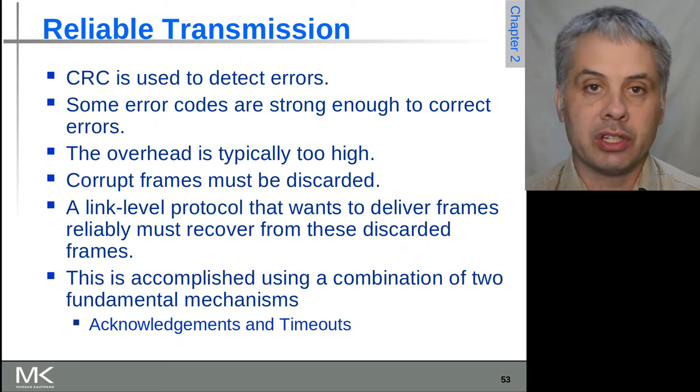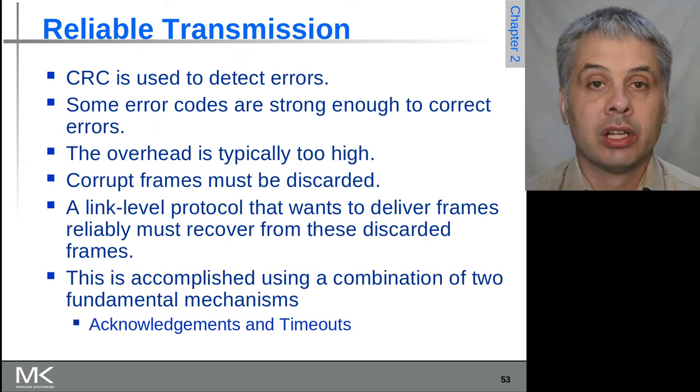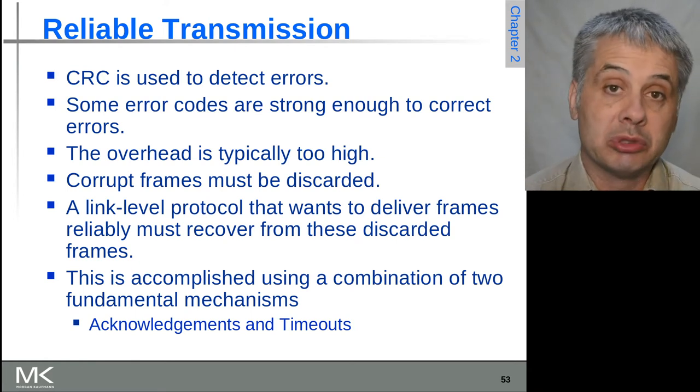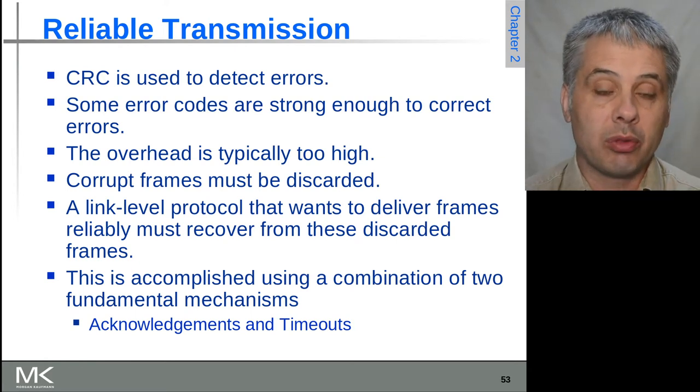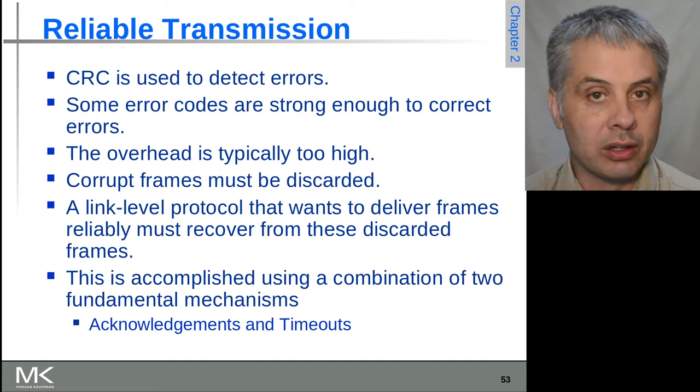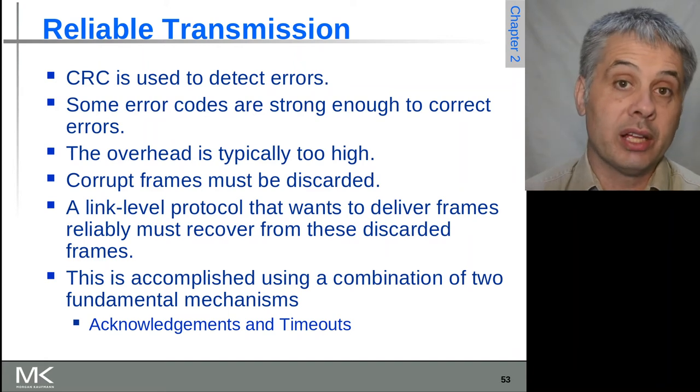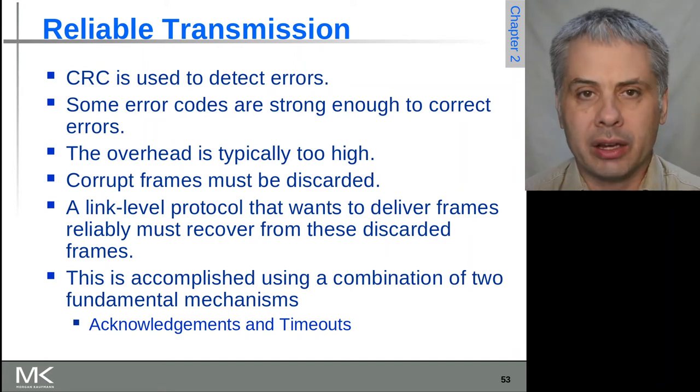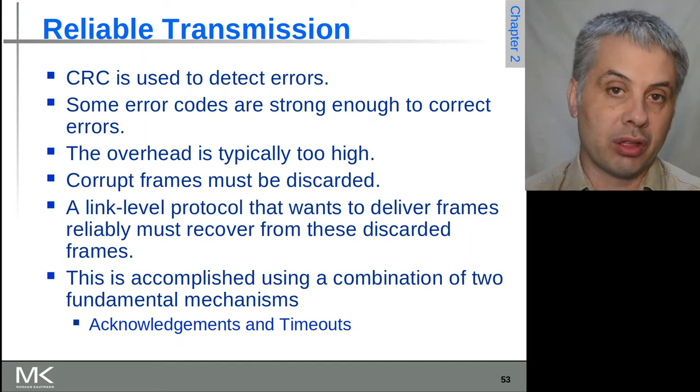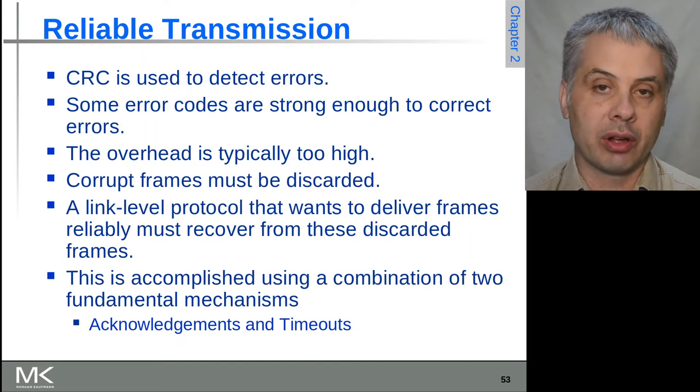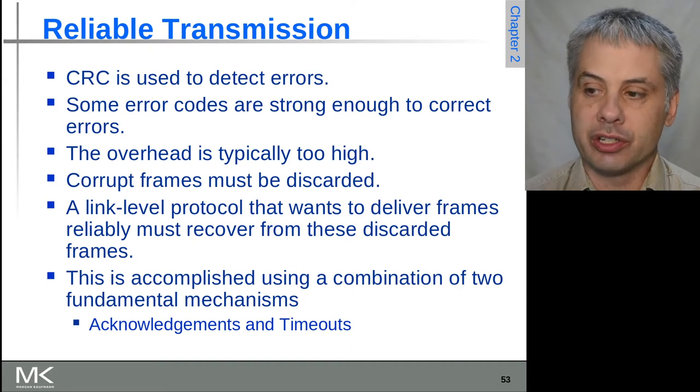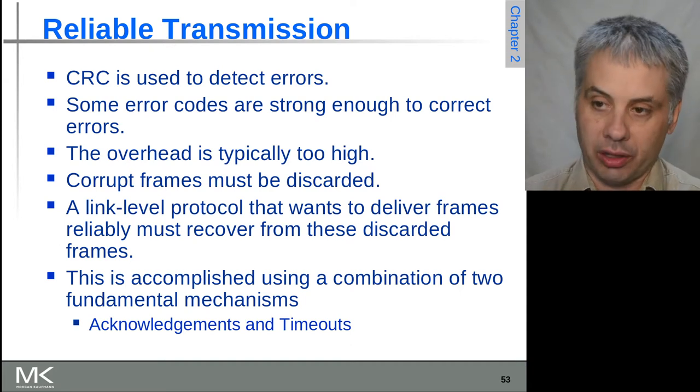You might have hundreds of bytes of overhead to have a decent error correcting code, but it would only be needed one in a million times perhaps. Yet you're wasting 20% of the bandwidth for a one in a million event. In that regard, CRCs and other error detecting codes tend to be more efficient.